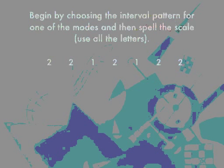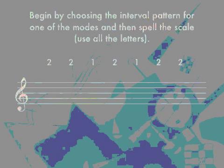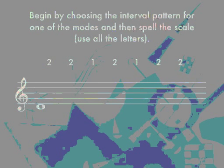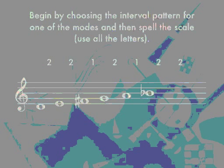Let's construct a scale starting on the note D. We go up a whole step — two semitones — to E, up two more semitones to F sharp, up one semitone to G, two semitones to A, one to B flat, two to C, and then we finally end up on D at the top.